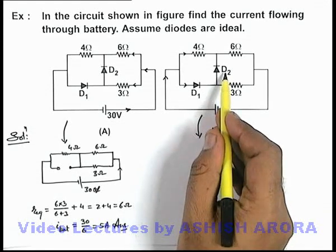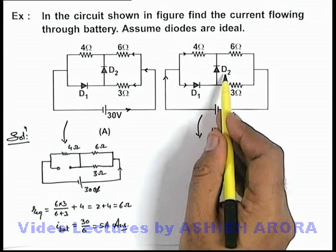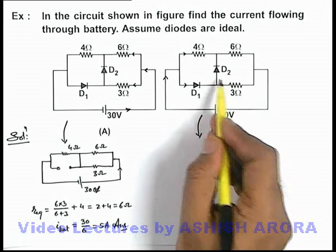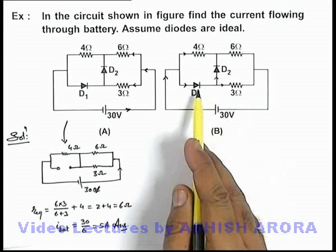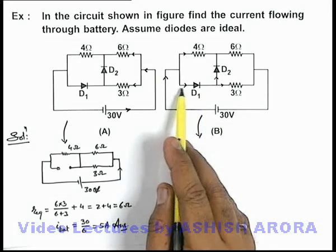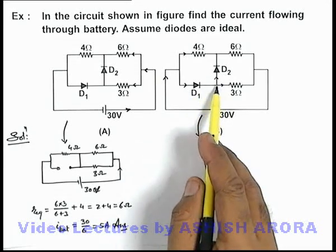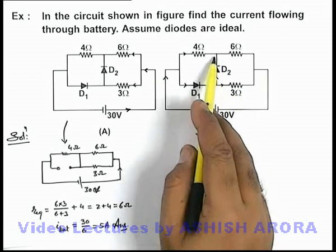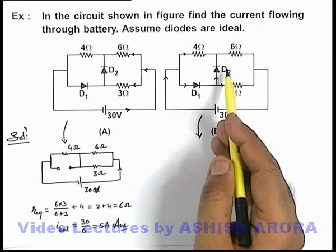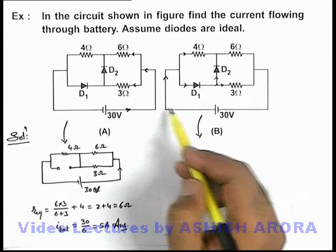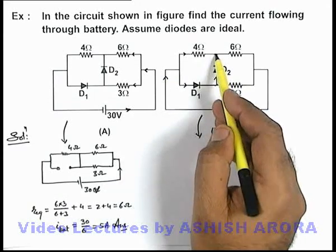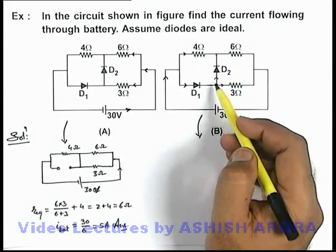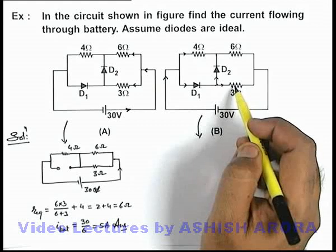That D2 will also act as a forward bias diode because the current has to flow. Here when current will approach from D1 it has two paths to flow, one is from 3 ohm other is from D2. Then obviously we can see the potential of this side which will become 30 volt and this will be less, so D2 will be forward bias and current will flow through both of these directions.